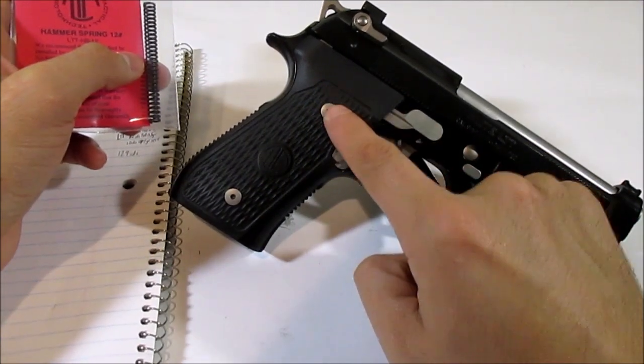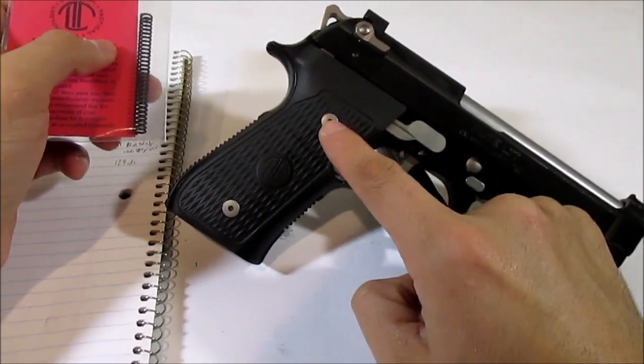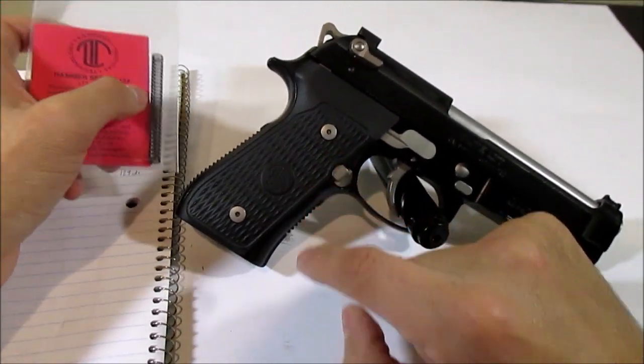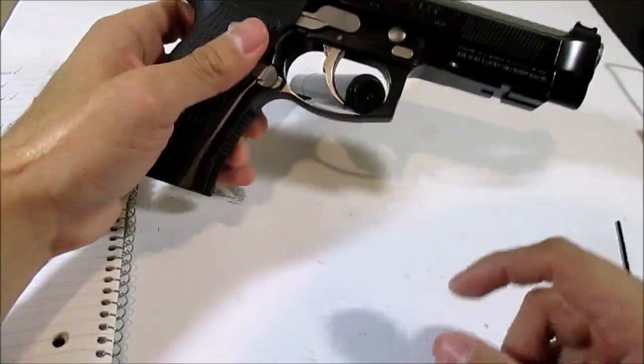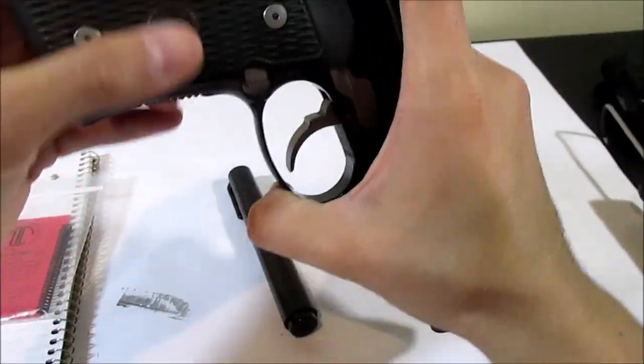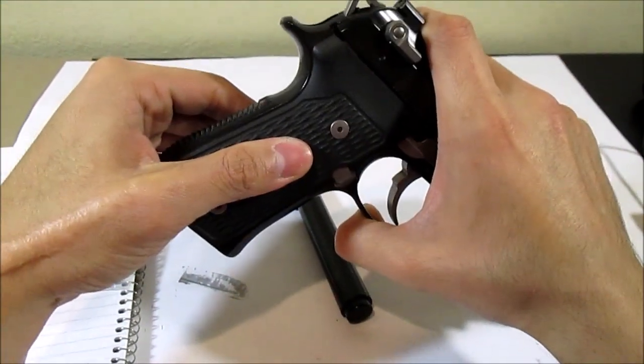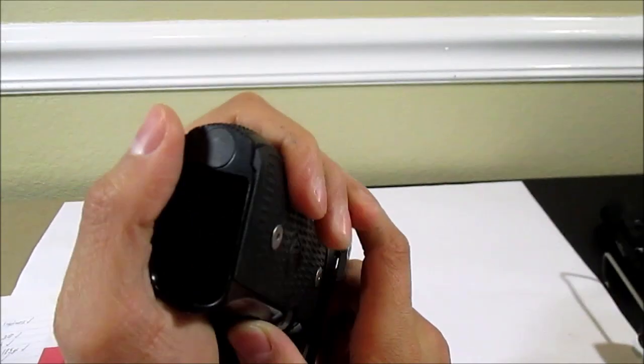So these screws are T8 Torx screws, the one that looks like a star. So you take off both of these grip panels and then down over here.